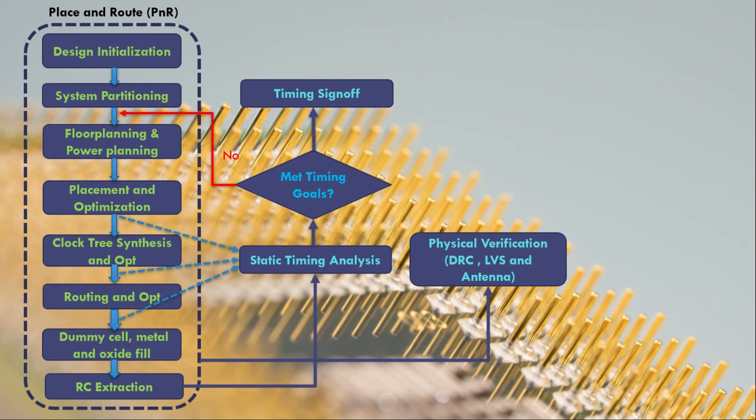There will be LVS, which is layout versus schematic. We need to make sure that our layout is implementing the same function as that of the schematic netlist which is given. So that comparison has to happen. That also happens at this stage. And also antenna violations and other issues will be checked. I have a video on antenna violation. Please go through it to get more information.